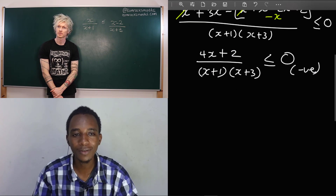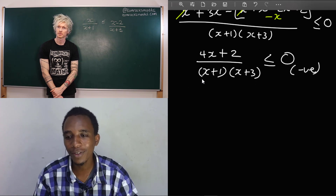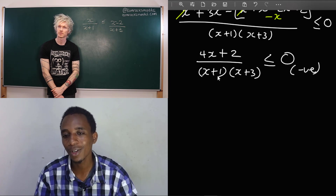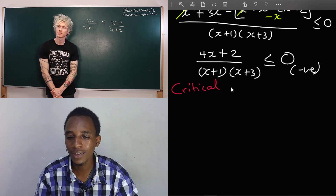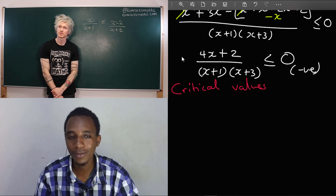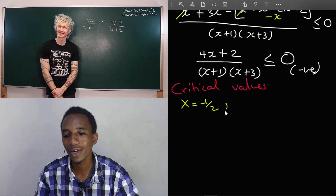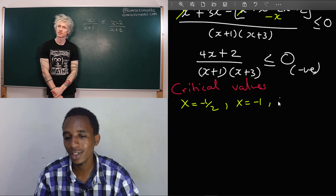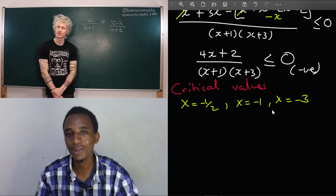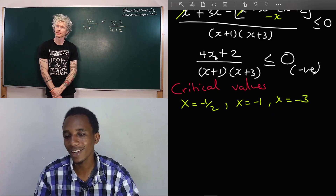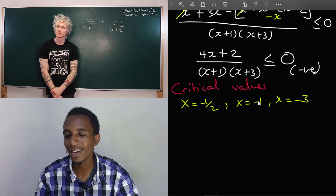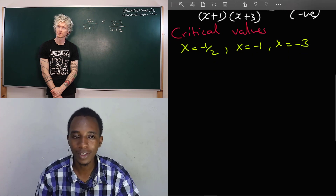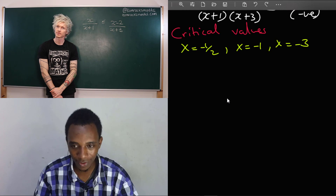So I would want to first find what I would like to call the critical values — values that can make this to be either 0 or to blow up the whole thing. The critical values are easy to find: I'll just equate every part of the expression to 0. So x equals minus a half will make the numerator 0, making the entire thing 0. And x equals negative 1 and x equals negative 3 are also sort of vertical asymptotes for this. Let me represent this on a number line — I think that's the easiest way to see this visually.